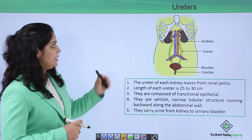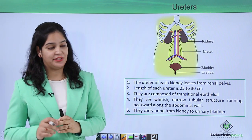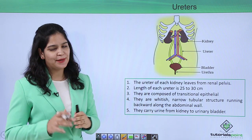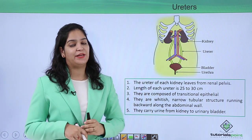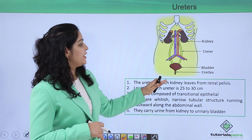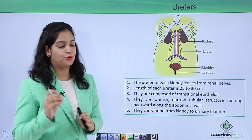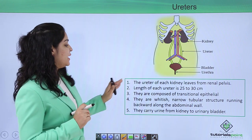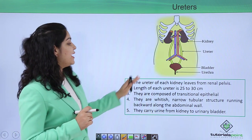First, let's talk about the ureter. A pair of ureters is present in our excretory system. Although they may seem less important, they are actually very important. The ureter of each kidney leaves from the renal pelvis, and the length of each ureter is 25 to 30 centimeters.